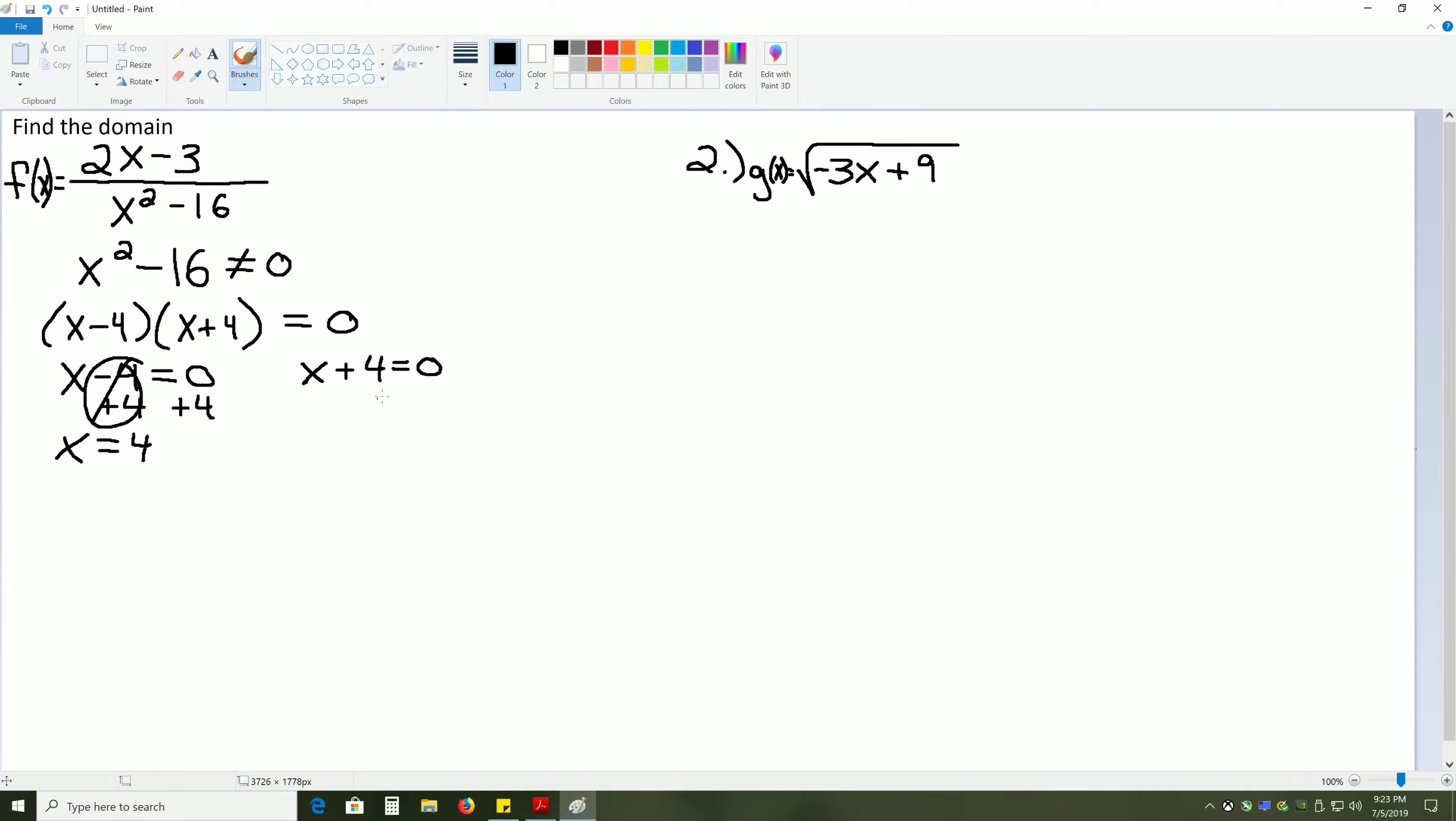Likewise, to cancel out this positive 4, we'll subtract 4 from each side, which gives us x equals negative 4. So, when x equals 4 or negative 4, the denominator will equal 0. But we can't have that.